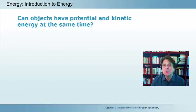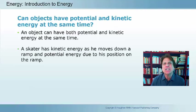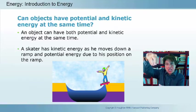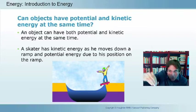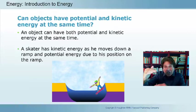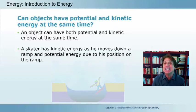Can objects have potential and kinetic energy at the same time? Yes, they can. Consider a skateboarder at the top of a ramp — at that point they have potential energy due to position, but no kinetic energy. Once they launch and pick up speed, they still have potential energy from falling further, but now also have kinetic energy of motion. Objects can have both kinetic and potential energy at the same time.